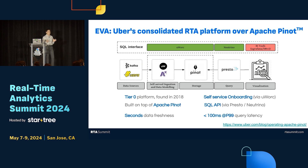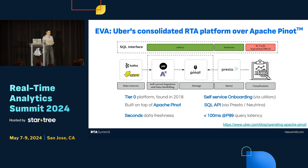Surrounding Apache Pinot, we build all kinds of components to improve user experience — for example, to provide a self-serve onboarding experience. We've also made improvements on the query interaction side. We built integration with Presto so users can use Presto syntax, and we're also working on a proxy so customers can use Pinot SQL directly. Across the platform for all use cases, the majority of queries finish within 100 milliseconds, and we provide second-level freshness for our mission to provide fast access to fresh data.